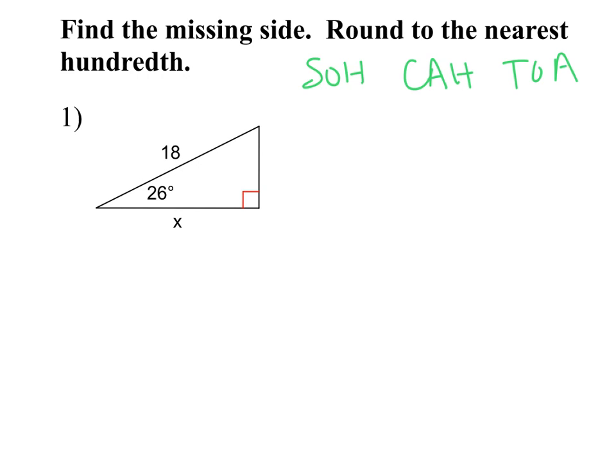The first thing we're going to do is the same as what we did yesterday: label the triangle. The big idea here is that I have a missing side I'm trying to solve for. I cannot use the Pythagorean theorem because I only know one side length, but I do have an angle measure — 26 degrees. Similar concept to the special right triangles, but this is not a special right angle.